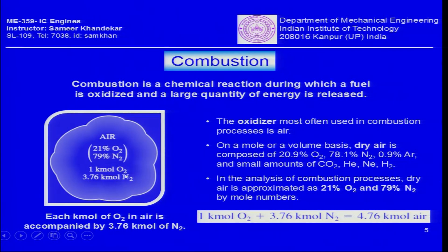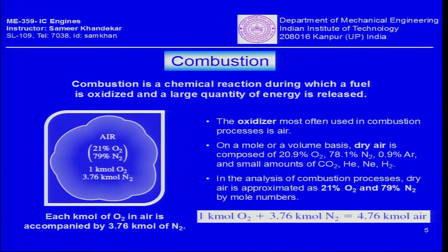For every 1 kilomole of oxygen there are 3.76 kilomoles of nitrogen in air, so 1 kilomole of O2 plus 3.76 kilomoles of N2 gives 4.76 kilomoles of air. Remember: each kilomole of oxygen in air is accompanied by 3.76 kilomoles of nitrogen, and the mixture primarily contains oxygen and nitrogen for analysis purposes.